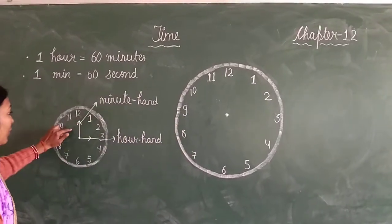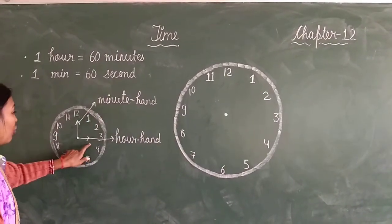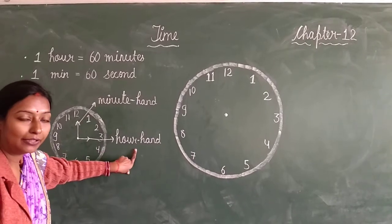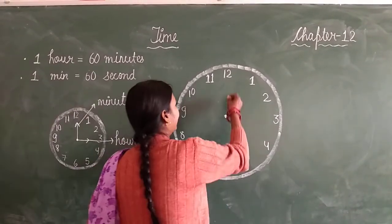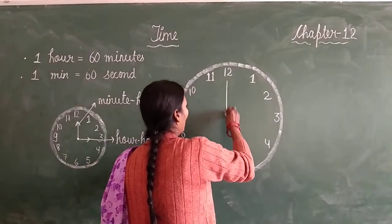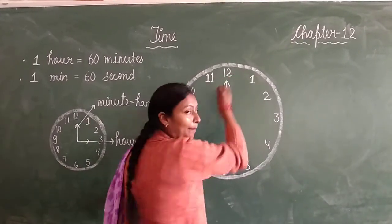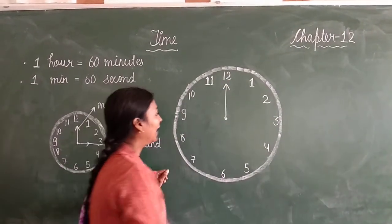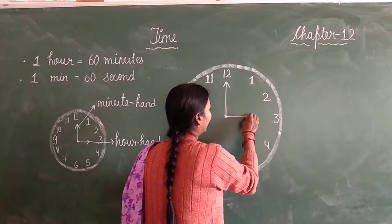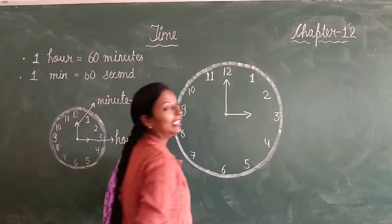Here we told you long hand is called minute hand and short hand is called hour hand. This one is the long hand. What we call it? We call it minute hand. And this one is short hand. What we call it? We call it hour hand.